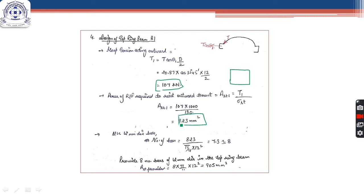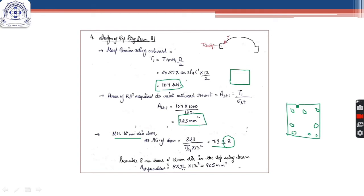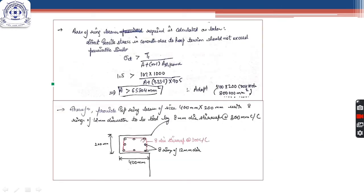The area of reinforcement for the hoop tension is Ast = T1 / σst = 423 mm². Assuming 12 mm dia bars, the number of bars comes out to 8. Since this is a beam, we need the exact number of bars. Ast provided = 8 bars × (π/4 × 12²) = 905 mm². We now find the cross-sectional dimensions of the ring beam such that the direct tensile stress in concrete due to hoop tension does not exceed the permissible limit.